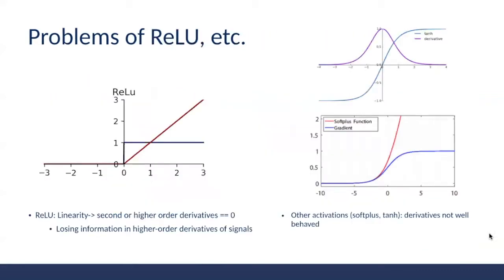The authors point out that this is partly due to the linearity nature of ReLU. By linearity, we mean that the second or higher order derivatives are always equal to zero. So MLPs using ReLU as their activation may fail to encode information contained in higher-order derivatives of signals. Alternative activations such as hyperbolic tangent or softplus may not have well-behaved derivatives. As you can see in this picture, the gradient for values greater than two or less than negative three become almost always the same — a very similar problem to ReLU.